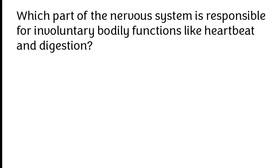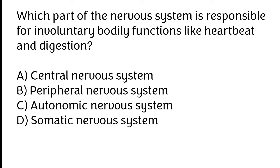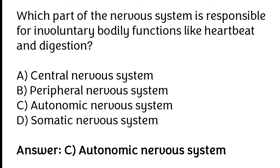Which part of the nervous system is responsible for involuntary bodily functions like heartbeat and digestion? Central nervous system, peripheral nervous system, autonomic nervous system, or somatic nervous system. The correct answer is option C. The autonomic nervous system is responsible for involuntary bodily functions like heartbeat and digestion.